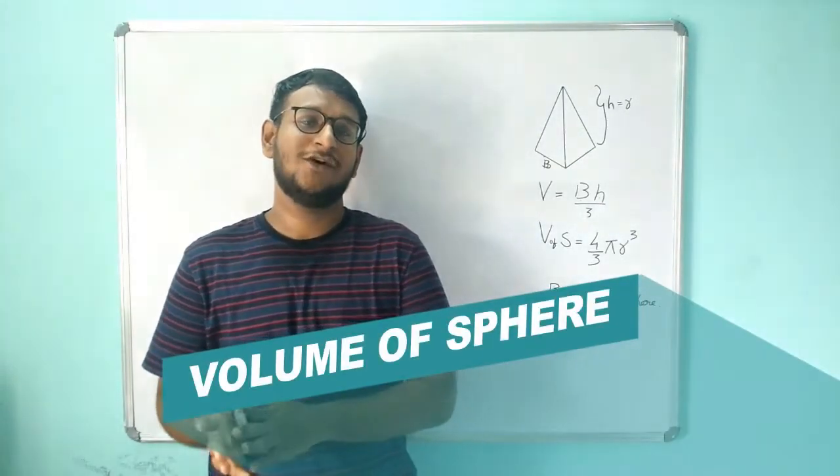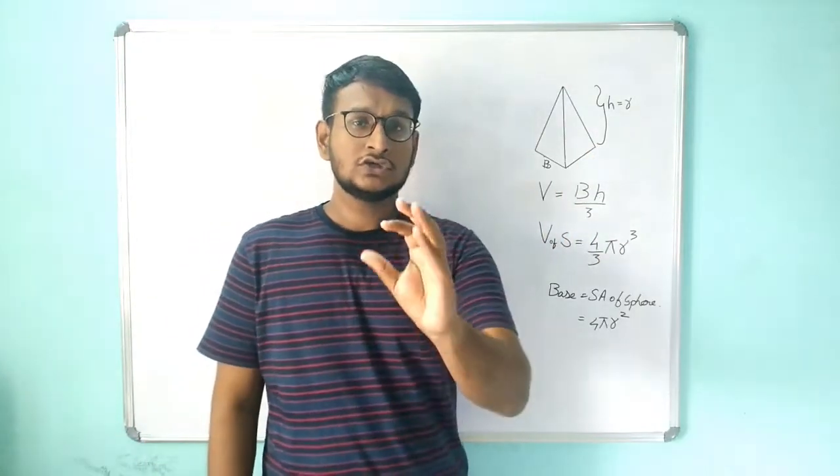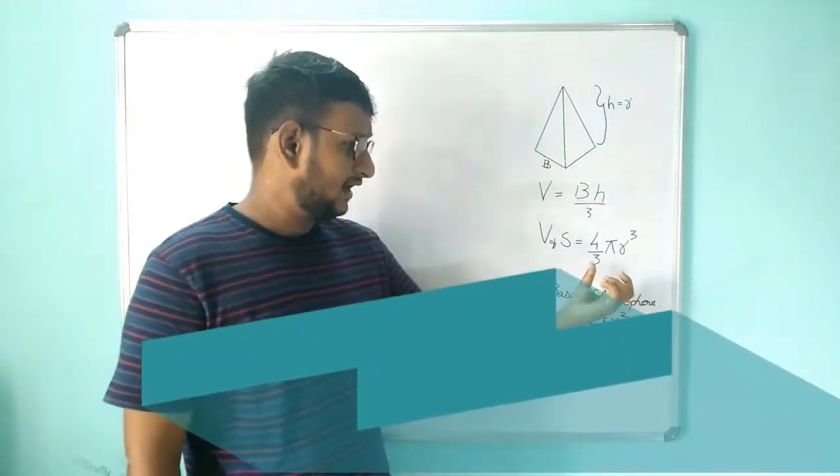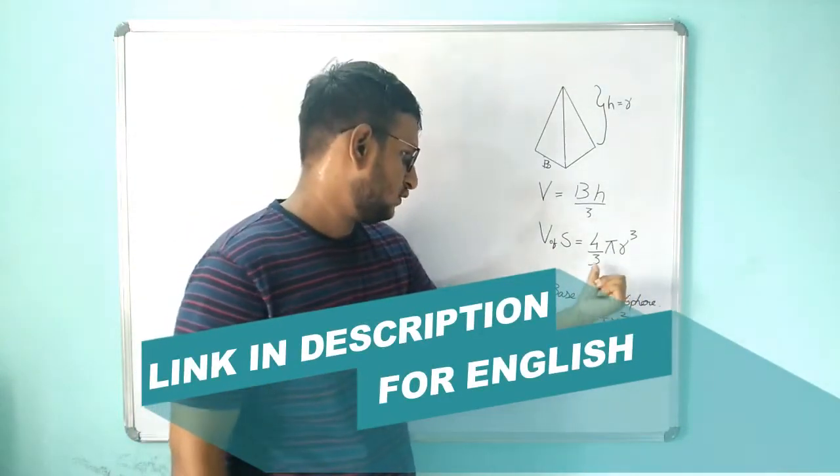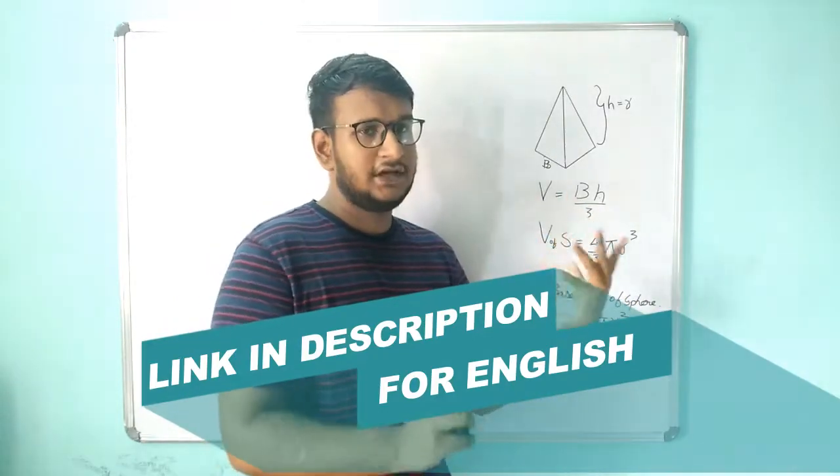So today we are going to see about the Volume of Sphere Formula. The formula is 4 by 3 pi r cube. This is the Volume of Sphere Formula.